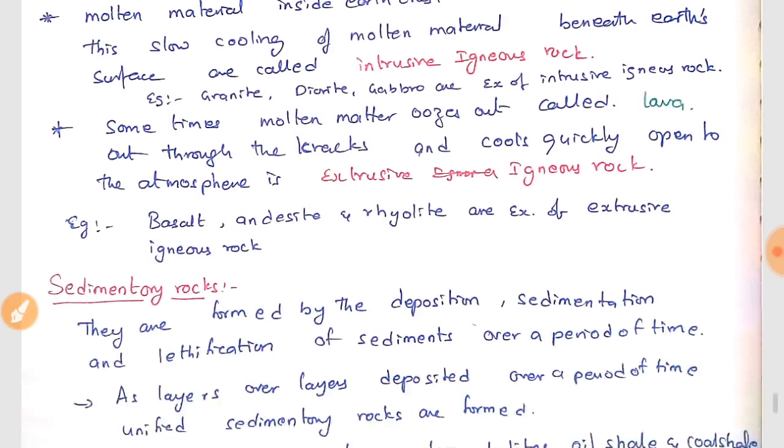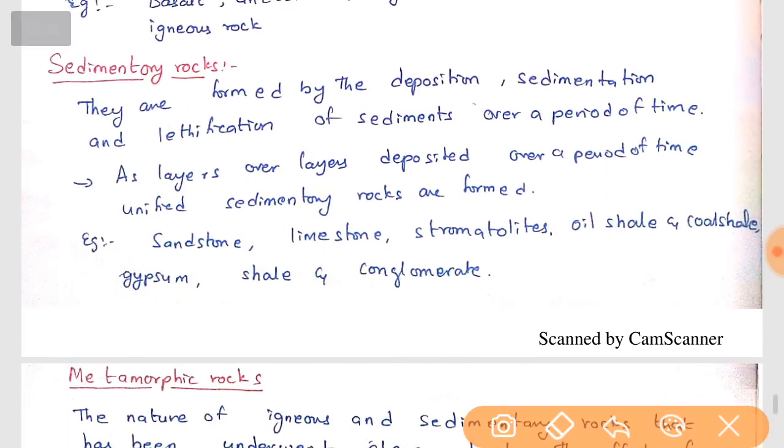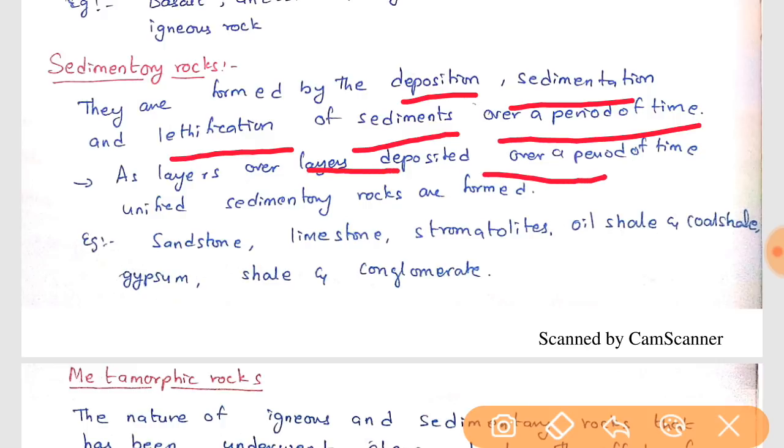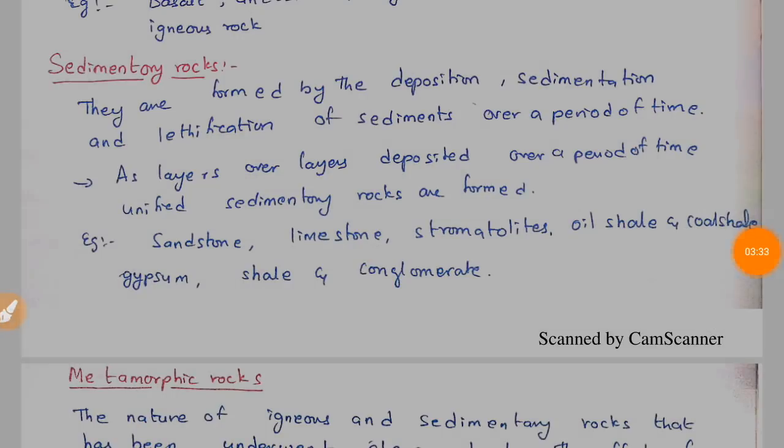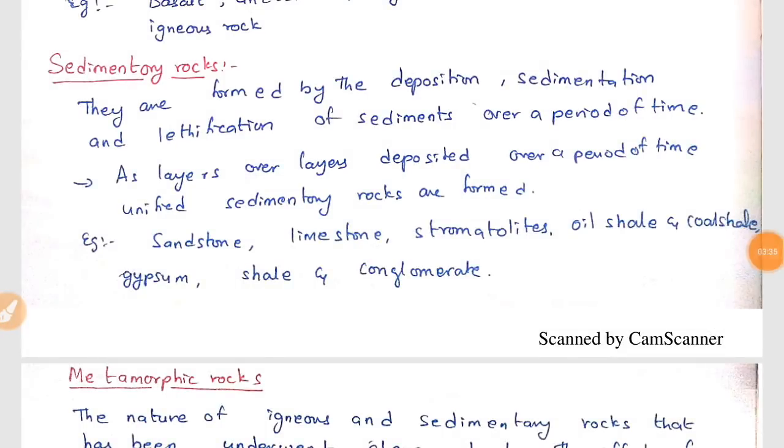Now we will see sedimentary rocks. These sedimentary rocks are formed by the deposition or sedimentation and lithification of the sediments over a period of time. As layers over layers deposited over a period of time, unified sedimentary rocks are formed. These are sandstones, limestones, stromatolites, oil shale, coal shale, gypsum, shale, and conglomerate are the examples of sedimentary rocks. What is sedimentary rocks?